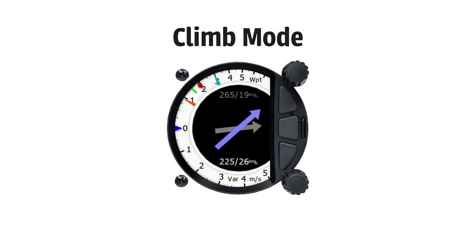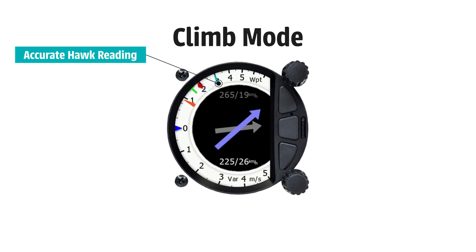Using the Hawk Vario in climb mode will calculate your potential climb rate. The best way to illustrate this is to imagine both of the needles, but the total energy is significantly lower than the Hawk. This could be due to flying sloppy in the thermal, making your actual climb rate lower than what it could potentially be, as shown by the blue needle. The Hawk needle gives you the best theoretical climb rate at that moment.